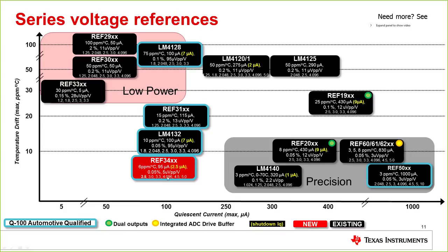The REF34xx family is the part I want to discuss in detail. As you can see on the XY chart, it's positioned in a balanced place — quiescent current under 100 µA with good drift and noise performance. For much less current than our highest-performance parts, you're getting quite close in terms of temperature drift and noise. The blue outline on the chart denotes AEC-Q100 automotive-qualified parts, and this device is also available in that grade.